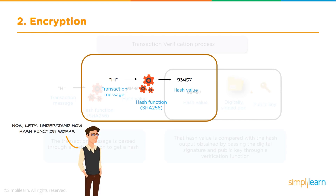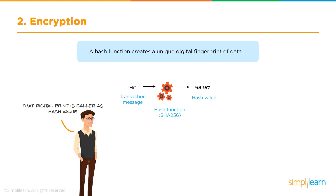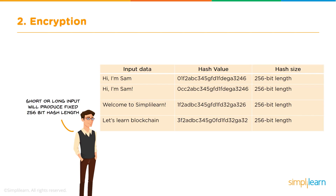Now let's see how the hash function works. The hash function creates a unique digital fingerprint of data. You pass the message through the hashing function and it generates a hash value called a digital fingerprint. It has a very unique property — there is no way to decode the original value from the hashed value; it is a one-way encryption. Whatever the size of the input data, the hash value is always of 256-bit length. We'll take a look at a demo at the end of this session showing how to generate a hash value using SHA-256.